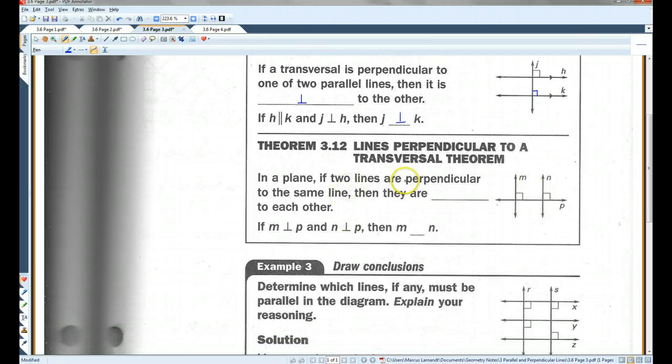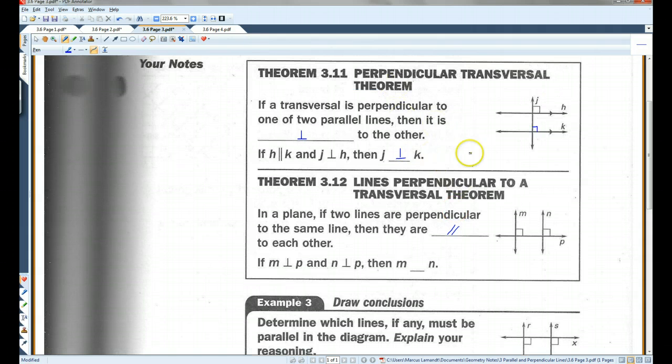In a plane, if two lines are perpendicular to the same line, then they are parallel to each other. It says kind of the same thing as what this one says, except in reverse. Over here, the theorem said that if the lines are parallel, then these two both have to be right angles. Here it says if these two are both right angles, then these lines have to be parallel. So if M is perpendicular to P and N is perpendicular to P, then M is parallel to N.